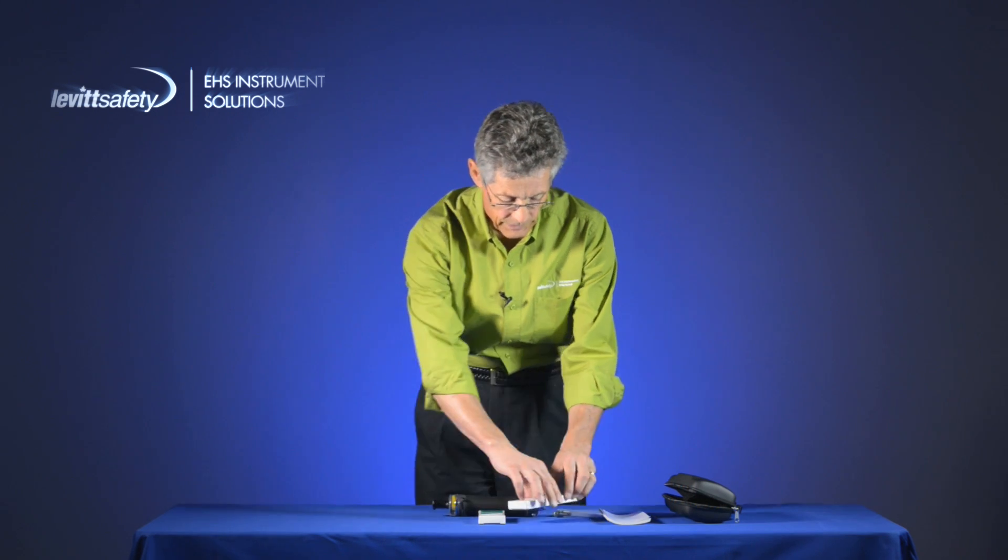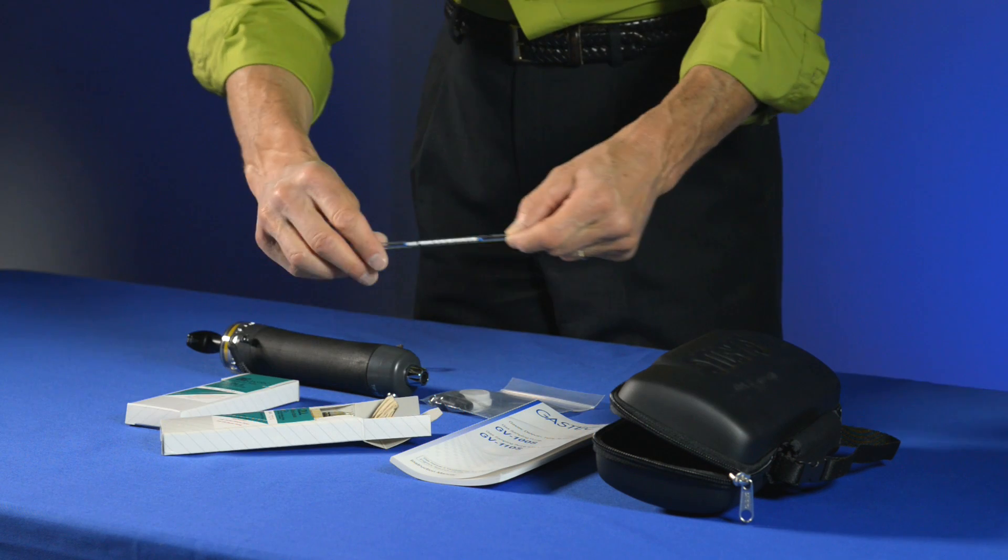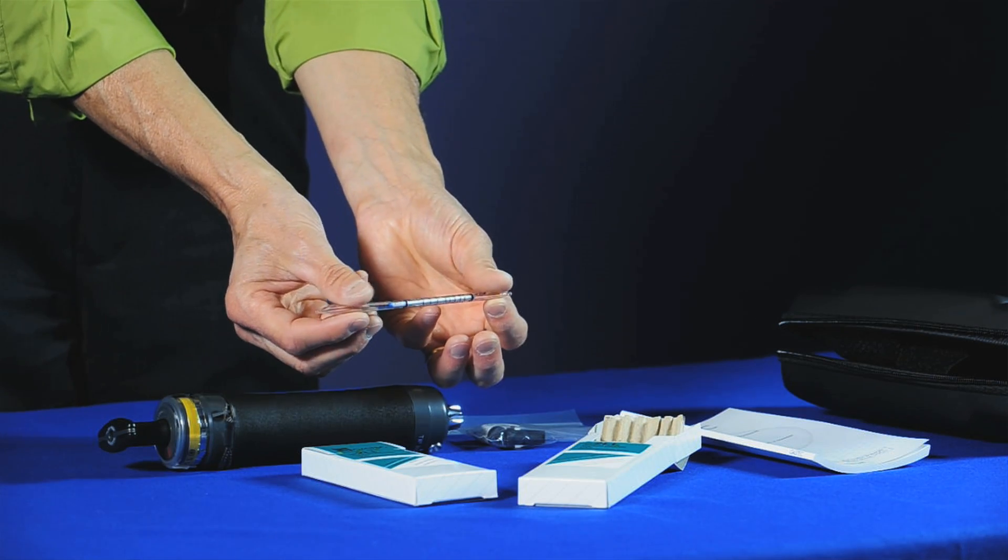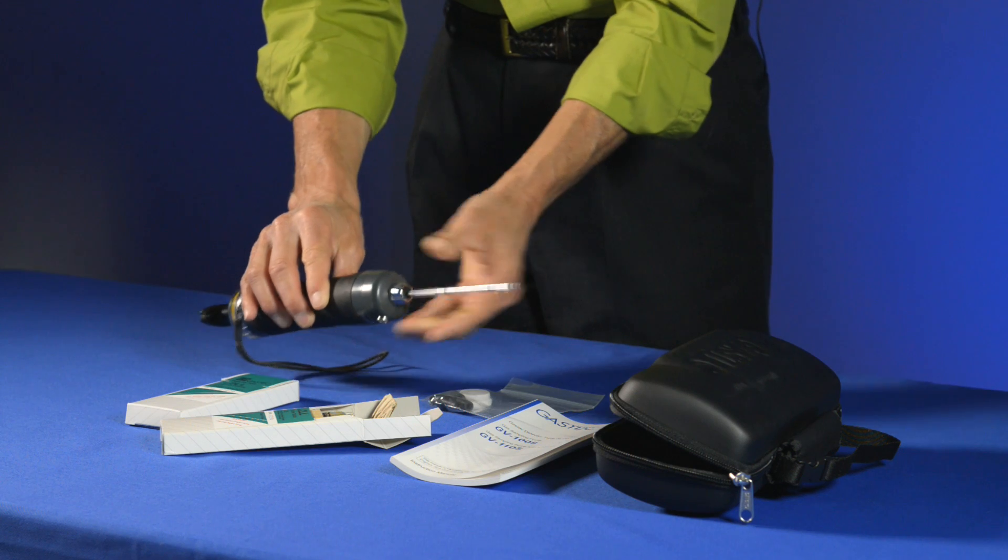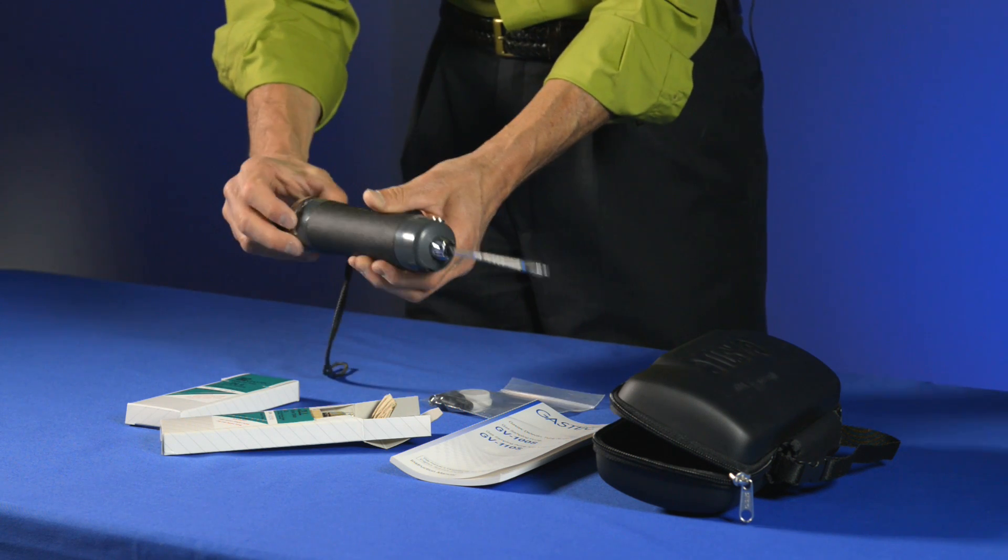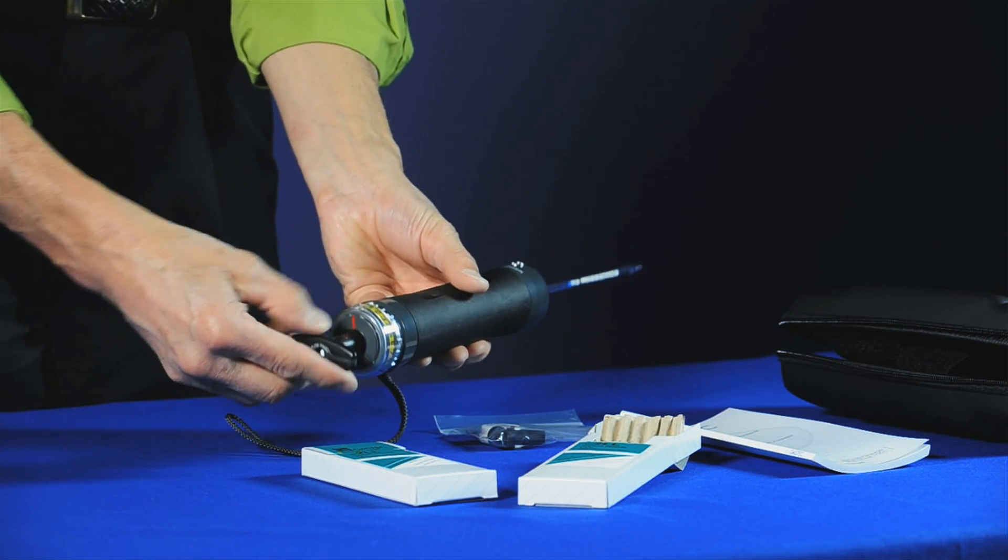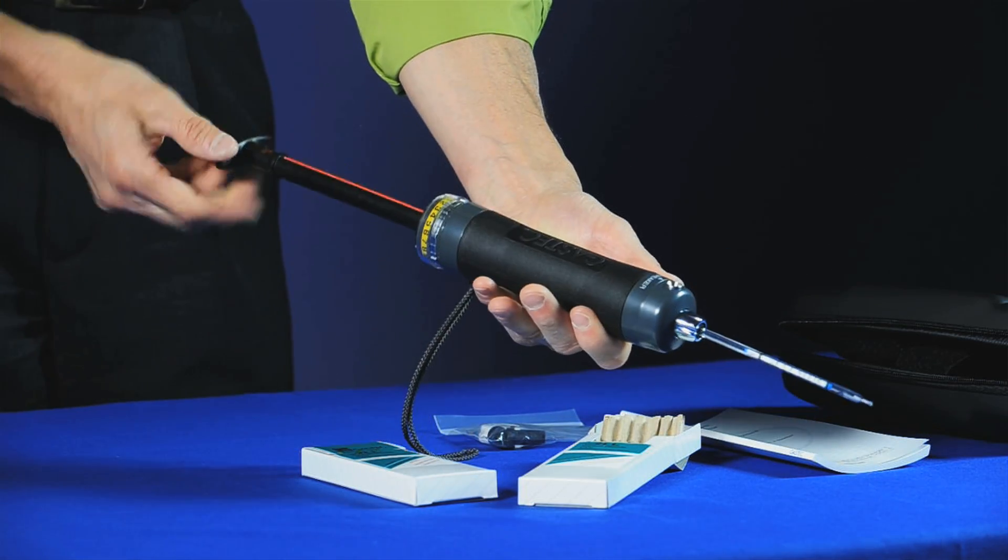There's a couple of things we have to do with detector tubes prior to use. One is to do a leak check. A leak check involves using an unbroken tube, inserting it into the front end of the pump, resetting the stroke counter, lining up the 100 cc mark and drawing out until it comes to a full click stop.